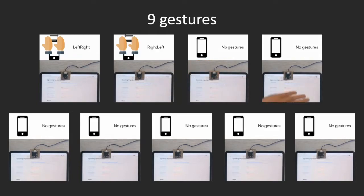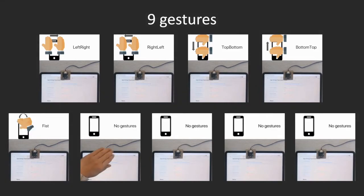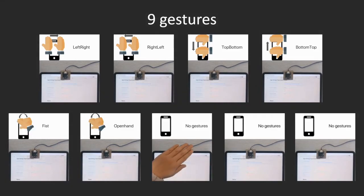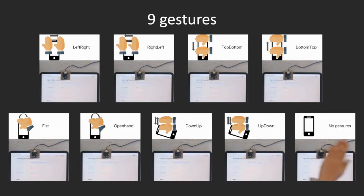SMART can distinguish 9 common gestures as shown in the video: left-right, right-left, top-bottom, bottom-top, fist, open-hand, down-up, up-down, and flip.